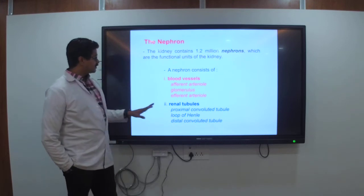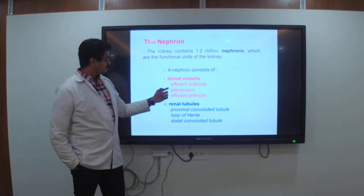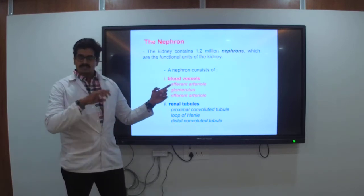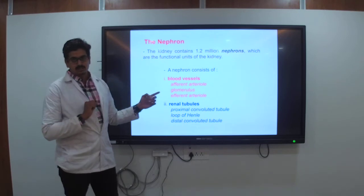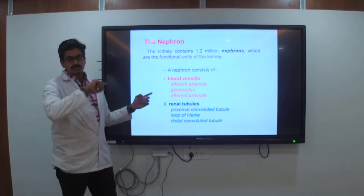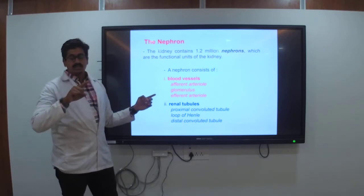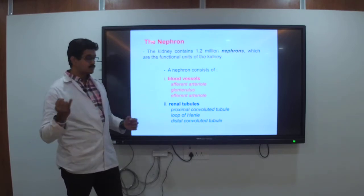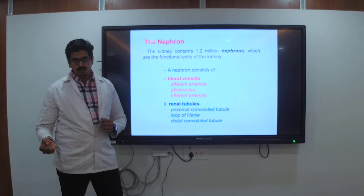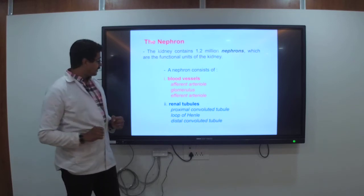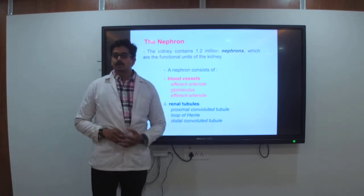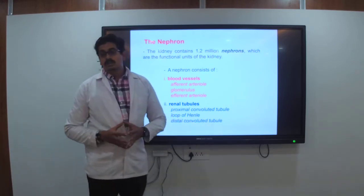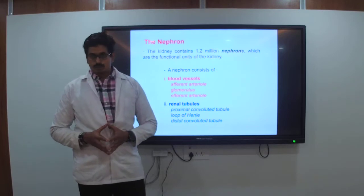The structure of the nephron: the glomerulus is enclosed in the Bowman's capsule. The Bowman's capsule — also called the glomerular capsule — is where glomerular filtration occurs. From there, the filtrate goes to the proximal convoluted tubule, loop of Henle, and the distal convoluted tubule, which is connected to the collecting tubule.